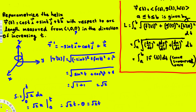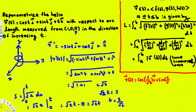Now the question is to re-parameterize this helix. We need to find t in terms of arc length s. Since s = √2·t, we get t = s/√2. To re-parameterize, we write the same equation r(t) and replace every t with s/√2. So the final answer is r(s) = cos(s/√2)i + sin(s/√2)j + (s/√2)k.